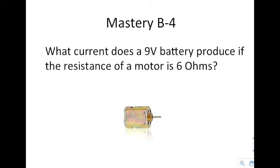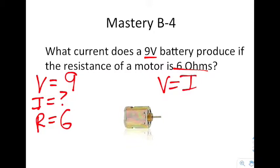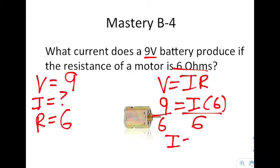Next, it says, what current does a 9-volt battery produce if the resistance of a motor is 6 ohms? So once again, we want to do V equals IR, but we want to do our given information. So you have 9 volts, you have 6 ohms, and in this case, you're actually looking for the electric current. What makes this a mastery level question is not that it's very difficult, but you actually have to rearrange this equation. When you do this, you get 9 equals I times 6. So you actually have to solve for I algebraically. You divide both sides by 6, and when you divide both sides by 6, you get I equals 1.5 amps.